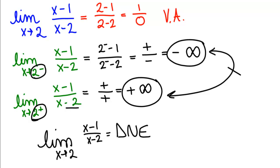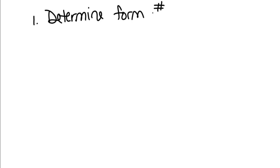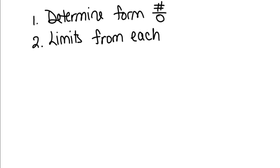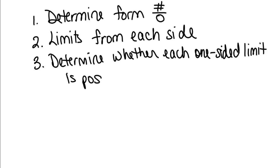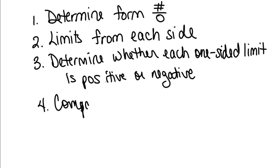The method to use when finding limits approaching a vertical asymptote: first, determine whether you have the form non-zero over zero. If so, take the limits from each side. Then determine whether each one-sided limit is positive or negative by looking at each term in the numerator and denominator. Finally, compare the one-sided limits to get the final answer.